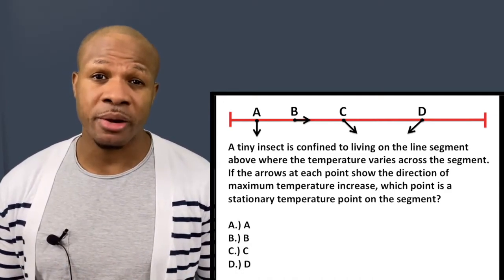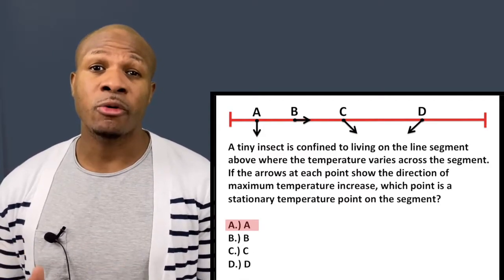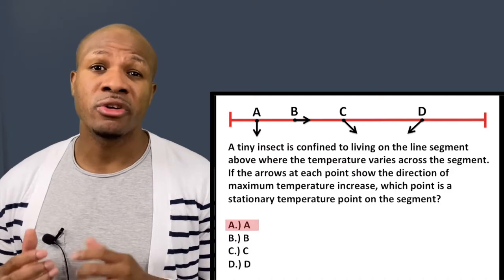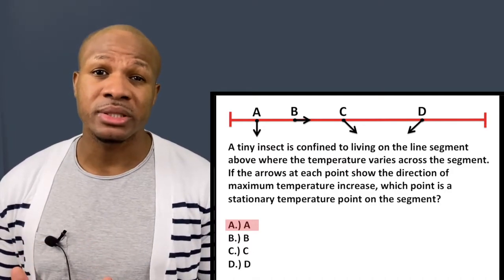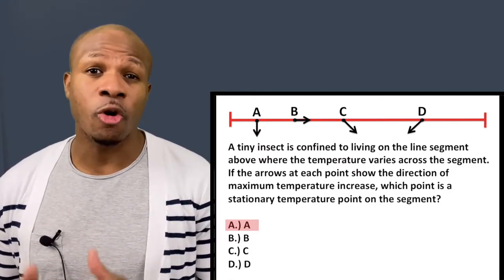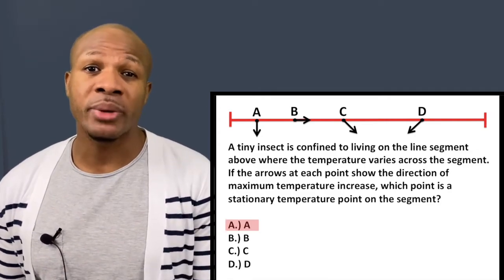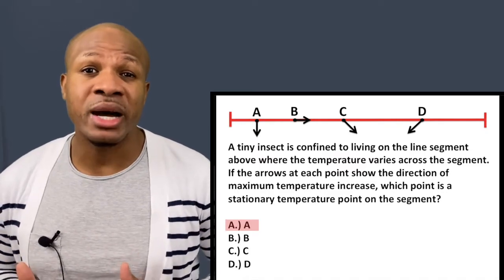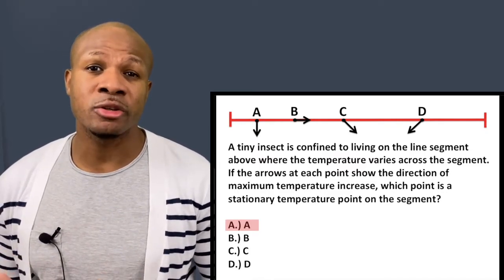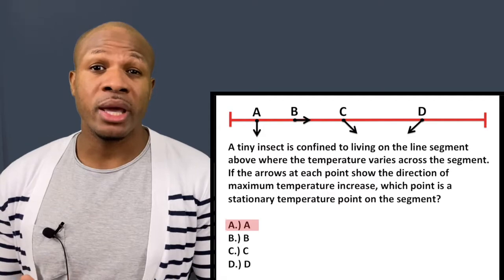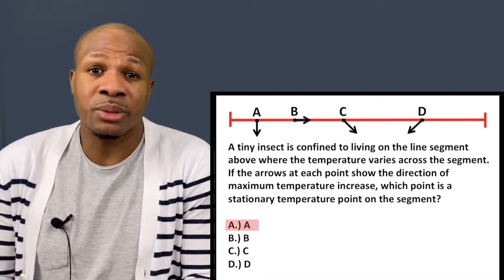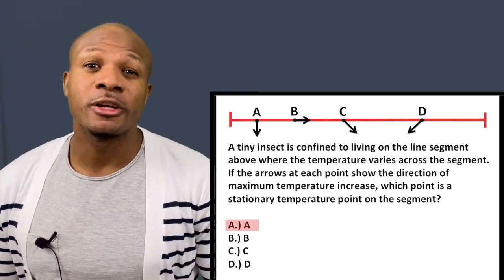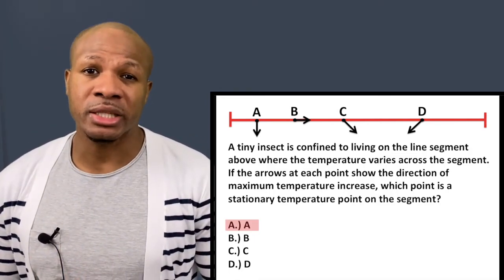The correct answer is point A. At point A, the arrow points directly down — directly away from the line of confinement. The only way to get a temperature change is to move up or down, but the ant is confined to the line and can only move left or right. Moving left or right from point A produces no temperature change, so point A is the stationary point.